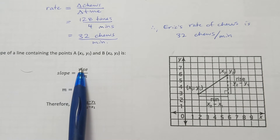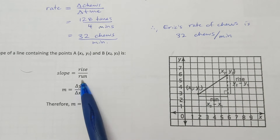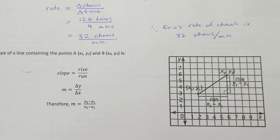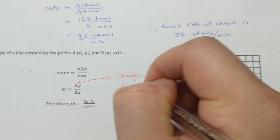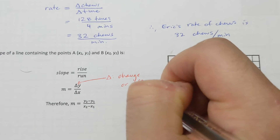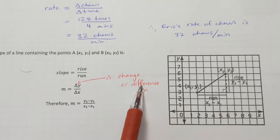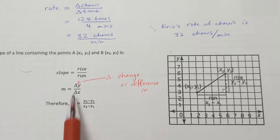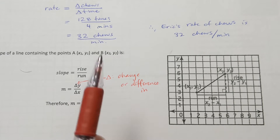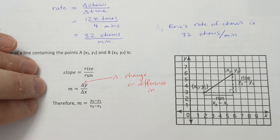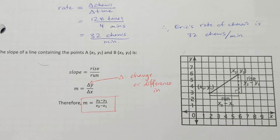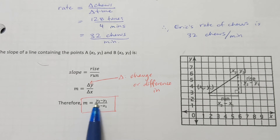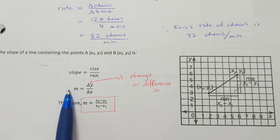Recall that slope is rise over run, where rise is the change in y and run is the change in x. The delta symbol represents change or difference: delta y is y2 minus y1, and delta x is x2 minus x1. These are your three formulas for slope, and the one we'll mostly use going forward is y2 minus y1 over x2 minus x1.